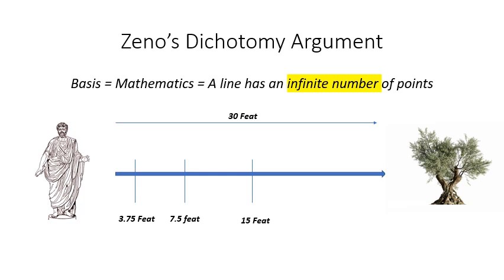Now, one thing to keep in mind at this point, and I think you probably see where he's going with this, is that a line has an infinite number of points. So in order for him to even get to the 3.75 feet, he would need to traverse an infinite number of points.